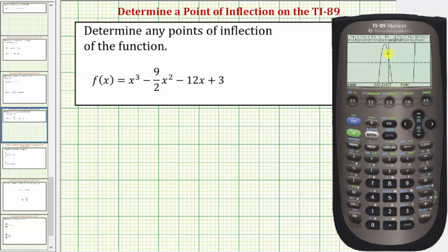Notice how we see part of the function, but we need to adjust this window to get a better view. We can eliminate some of the negative x axis and decrease the y minimum to see how low this function goes in this region.